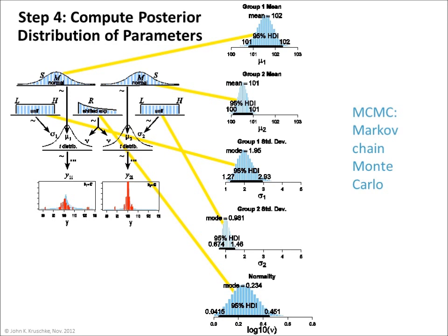The computer uses a method called Markov Chain Monte Carlo, or MCMC for short, to generate a large number — tens of thousands of representative credible parameter values. The more values generated, the higher resolution picture we have of the posterior distribution over the parameter values.